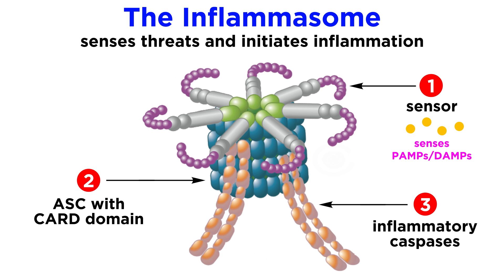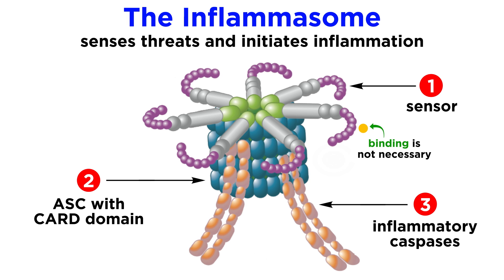As you might guess from its name, the sensor senses a wide range of pathogenic or damage-associated signals. Immunologists are still learning how sensing of these signals triggers a response, since the sensor doesn't necessarily need to bind the ligand in order for it to be sensed, which makes it different from a pattern recognition receptor.